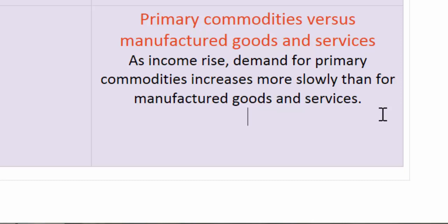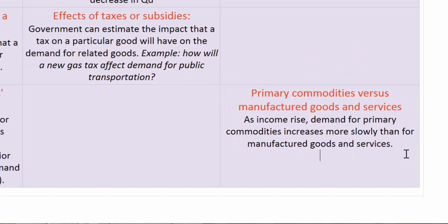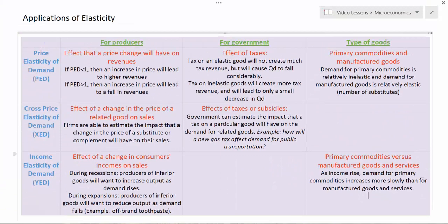A knowledge of this information will help producers of different goods and services respond appropriately as incomes are rising, in developing countries in particular. In this lesson, we've looked at the applications of demand elasticities — PED, XED, and YED — for producers, for the government, and depending on the different types of goods being produced. A knowledge of elasticity allows producers and the government to make informed decisions about output, prices, and the use of taxes and subsidies.